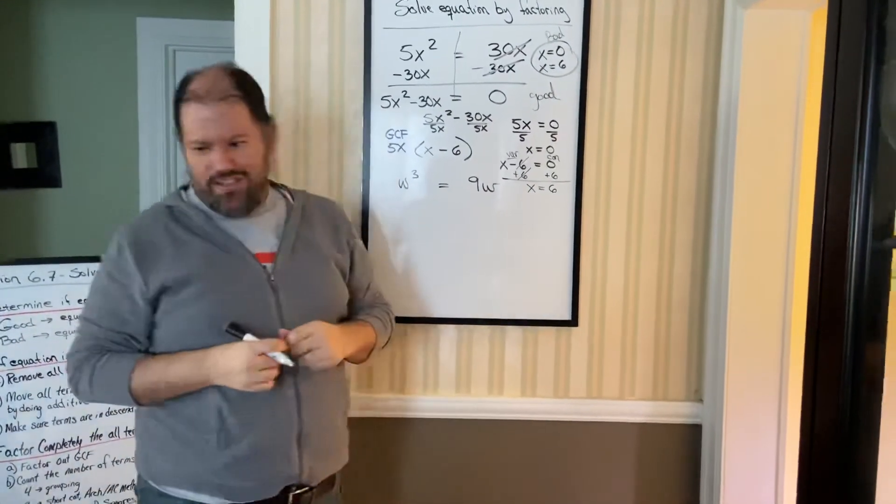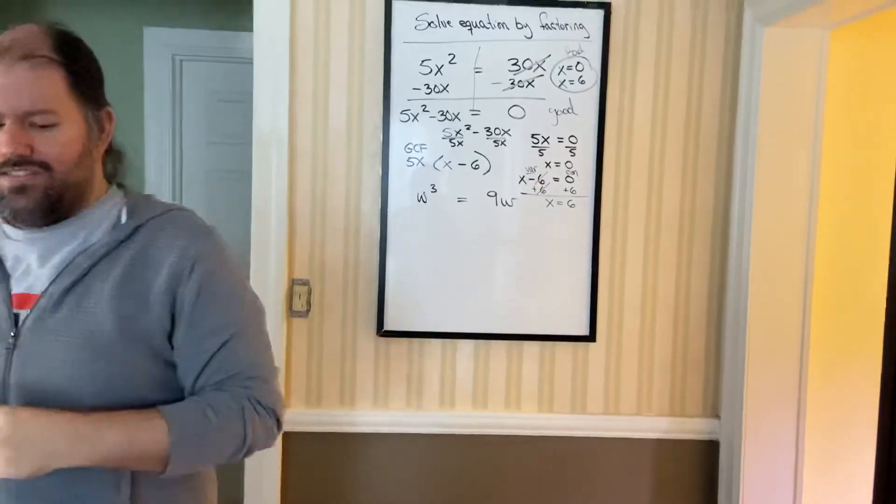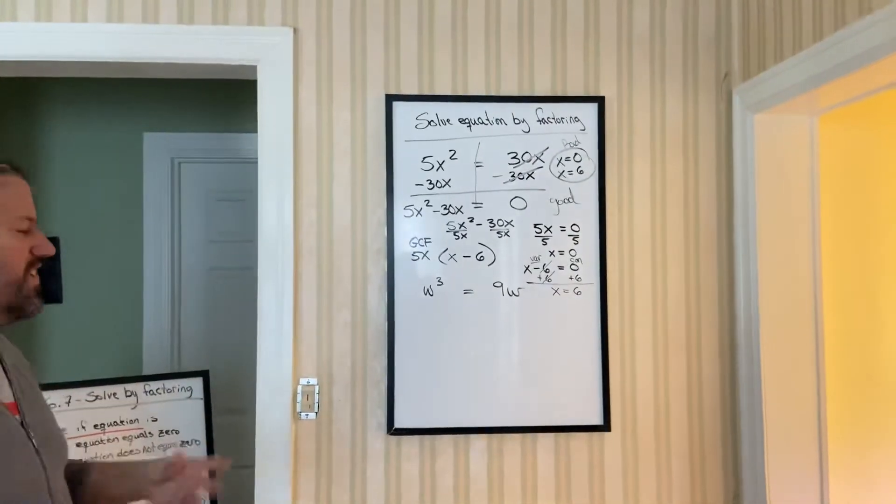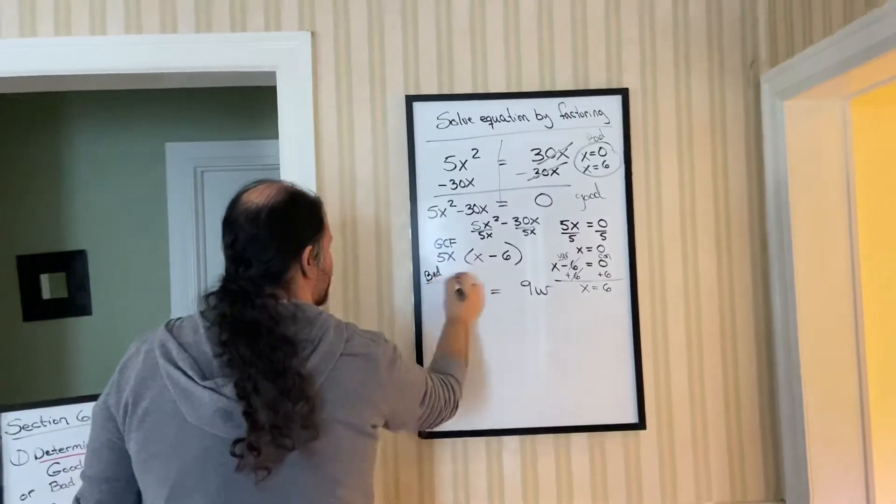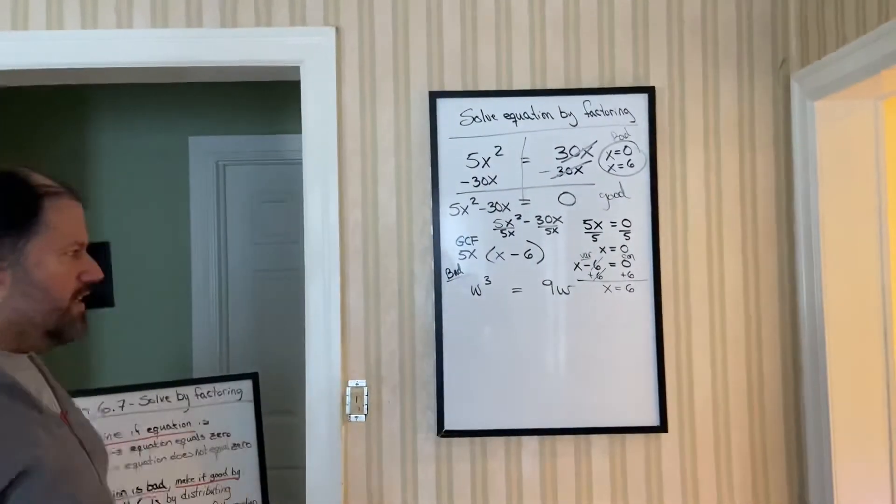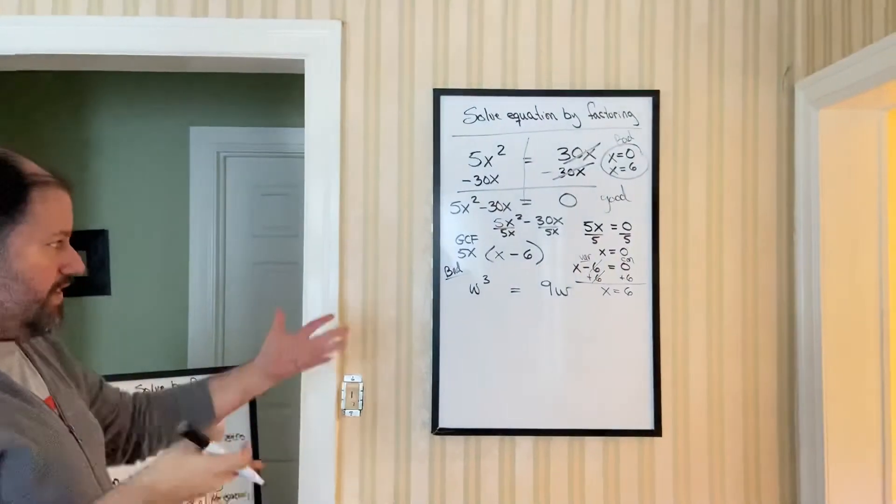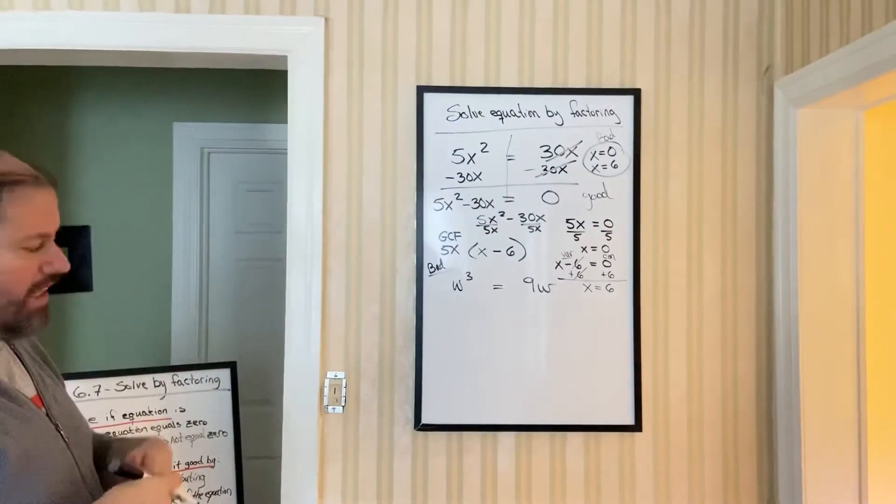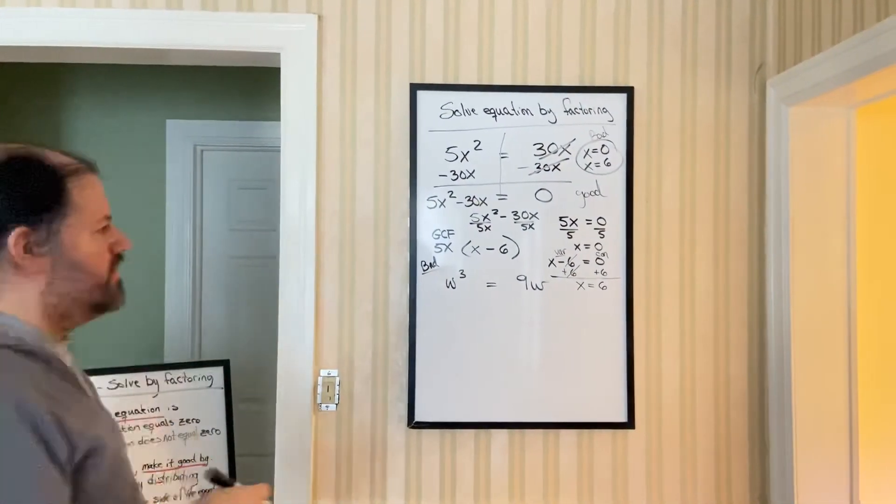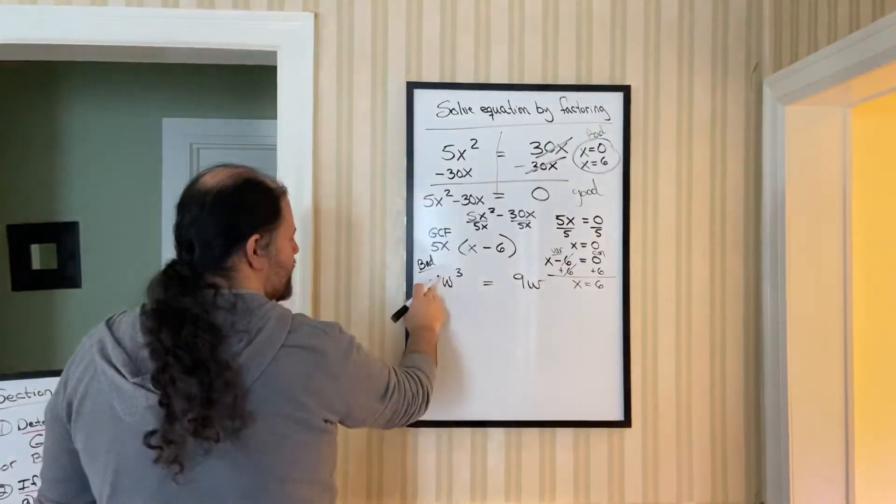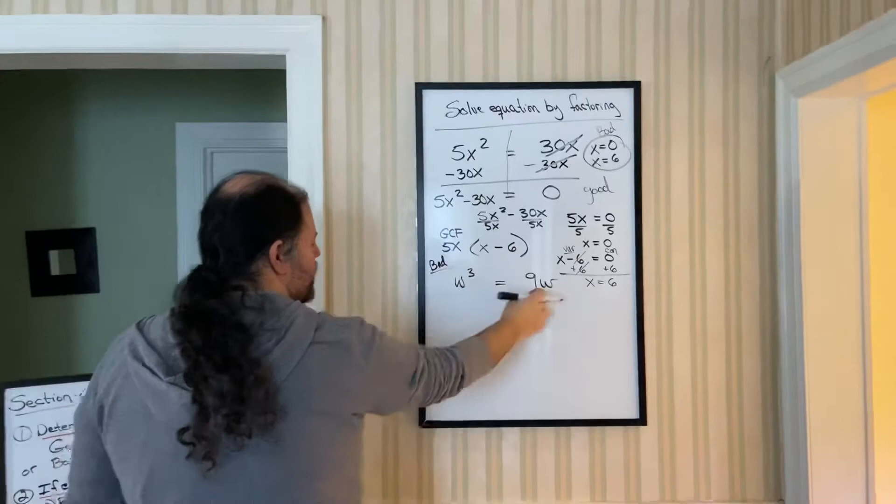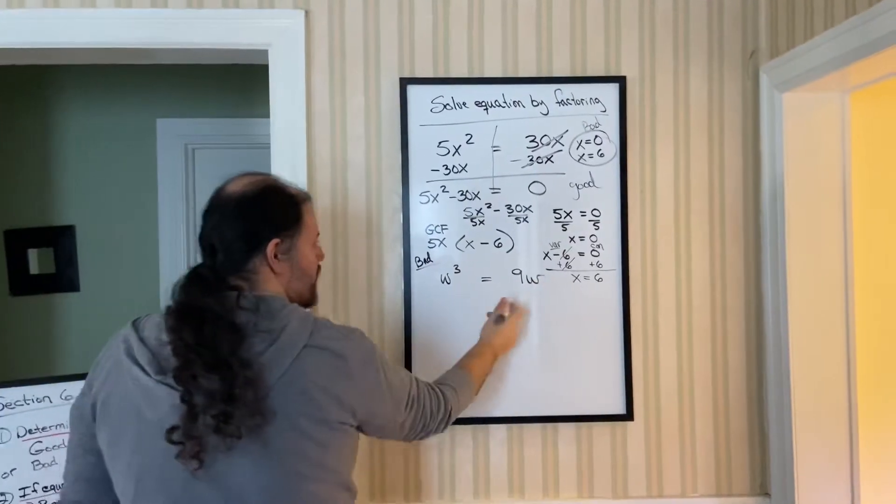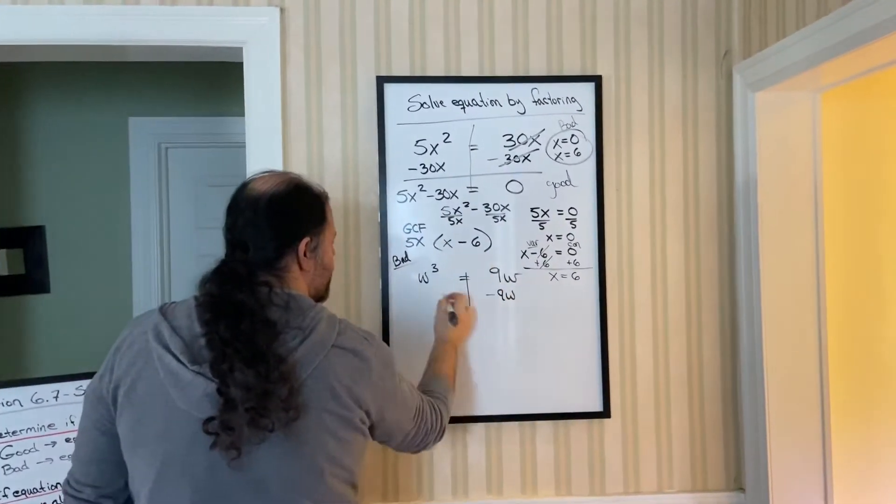Let's do this other one that's up here as well. Notice, doesn't equal 0. So we already know this is bad. When it's bad, we have to make good. To make good, we're going to see if there's any parentheses. No. Then we're going to move. And of course, I want to keep this positive, the higher exponent. Keep the coefficient positive, so it's easier to move the 9w over. So subtract 9w on both sides.